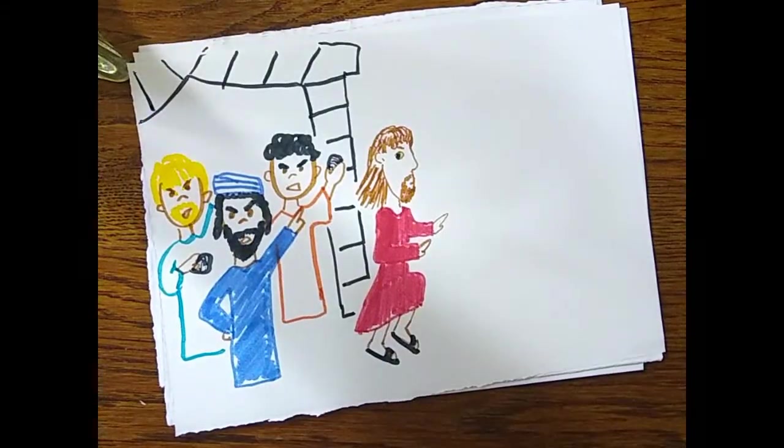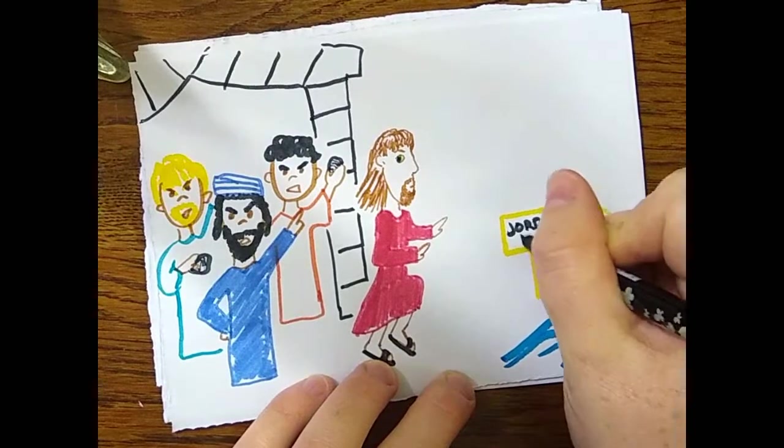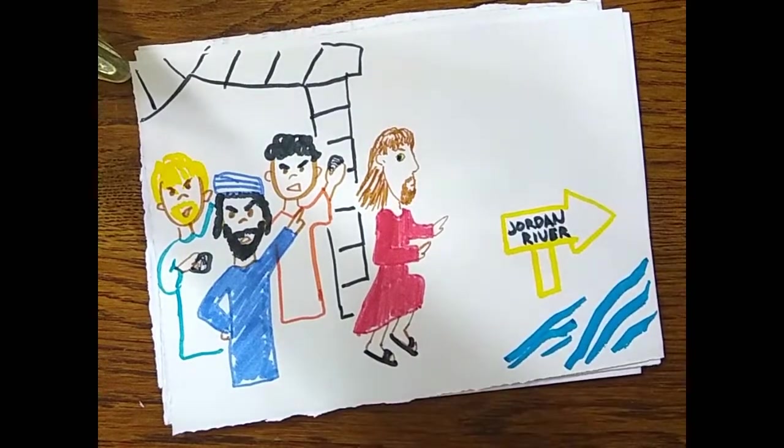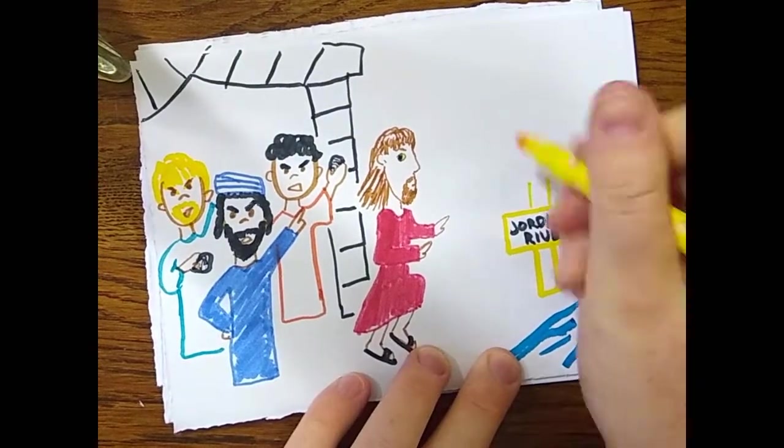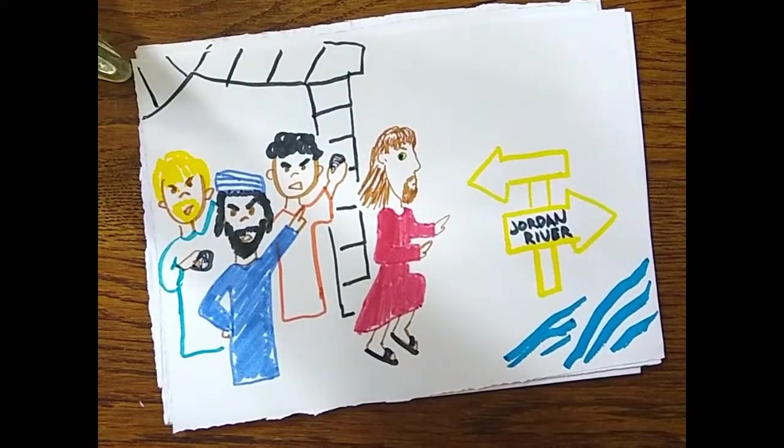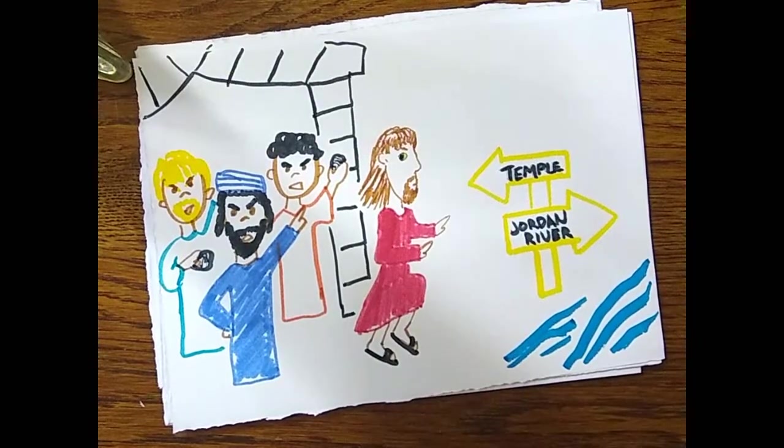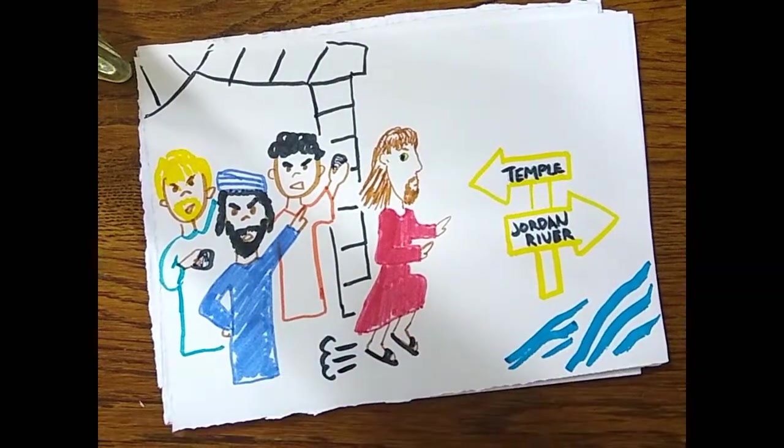Rather than being happy to hear that their messiah had finally come, they picked up stones to kill him with. Now it wasn't Jesus's time to die so he and his friends made it out of there really quickly and they left Jerusalem to go keep teaching and preaching elsewhere across the Jordan River.